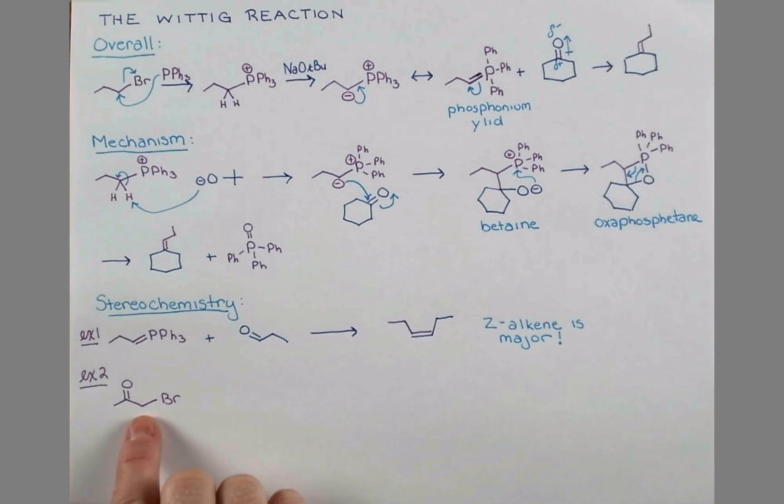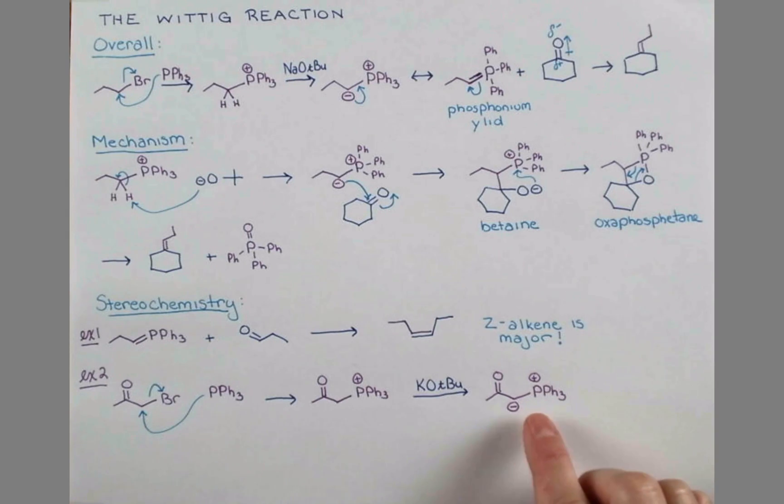If we treat this alpha-halo ketone with triphenylphosphine, the SN2 reaction will proceed very smoothly. These are great substrates for SN2 reactions. Now we'll deprotonate to make our ylid. And now, of course, we can draw this, push our electrons in to make the neutral form of our phosphonium ylid. But we should notice something else about this anion here. It's basically an enolate in this case.